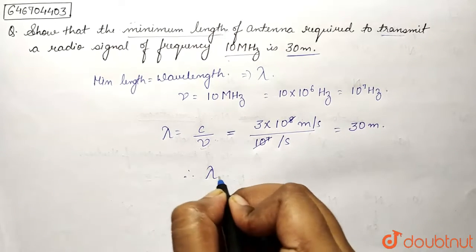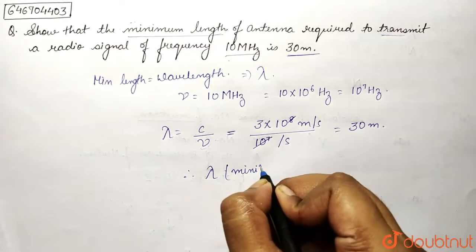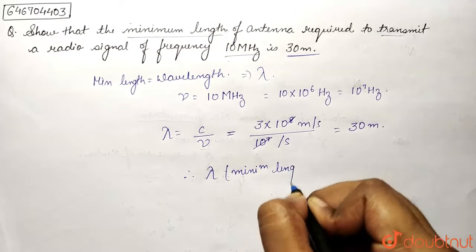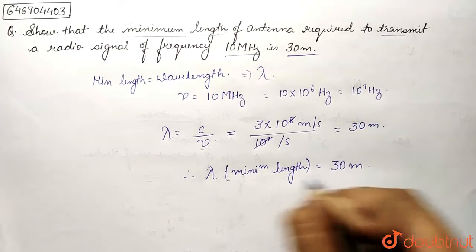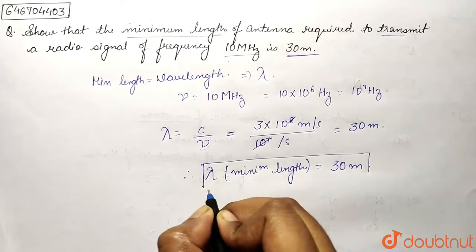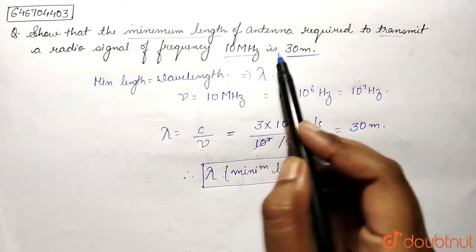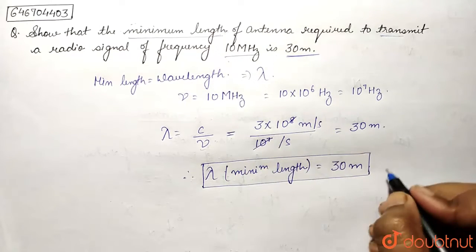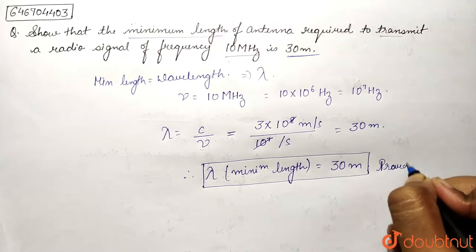Therefore lambda, that is the minimum length, equals 30 meters. This is the minimum length a radio signal will be transmitted of frequency 10 megahertz. So this is what we need to prove, and we have proved it.